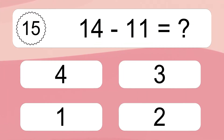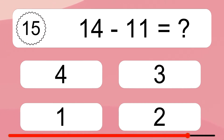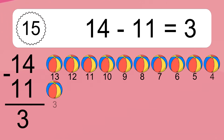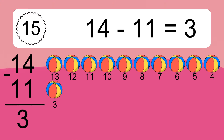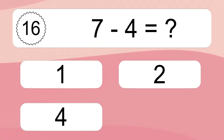14 minus 11 equals — let's count it: 13, 12, 11, 10, 9, 8, 7, 6, 5, 4, 3. 7 minus 4 equals what?